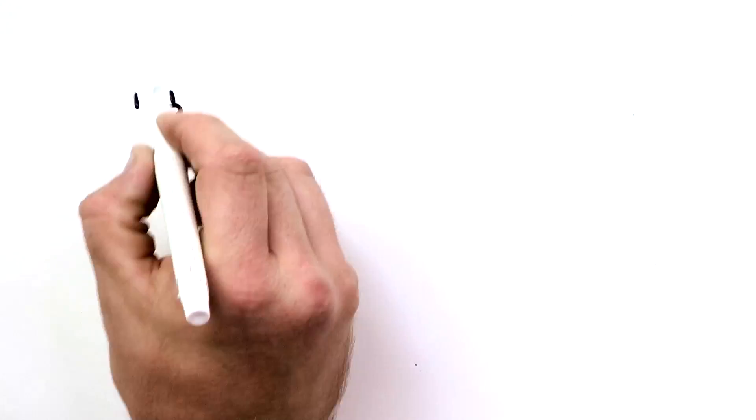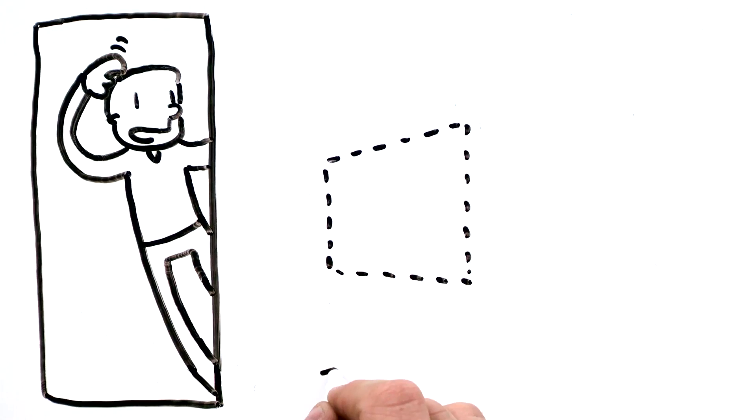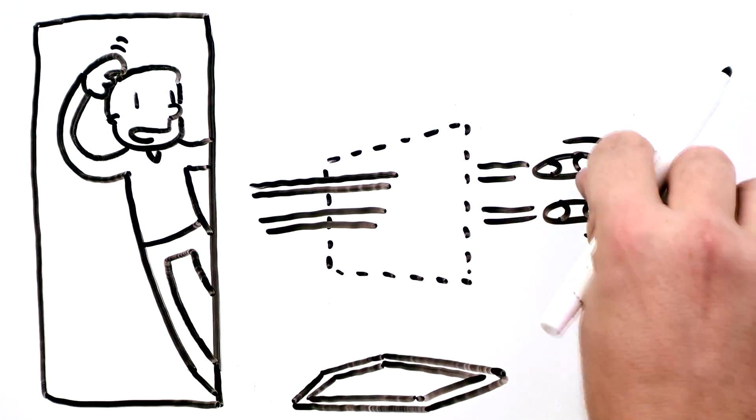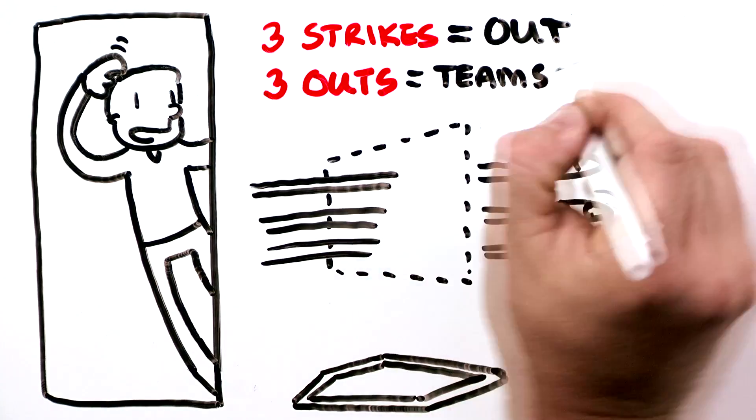From an outsider looking in, baseball appeared simple enough. A pitcher throws a ball at home plate, the other team's batter attempts to hit the ball and run around the field, but three strikes puts the batter out. Three outs and the teams switch.